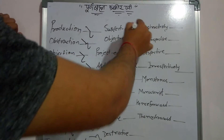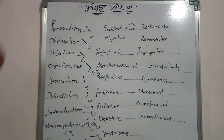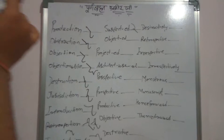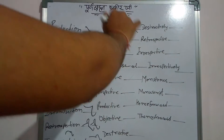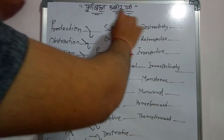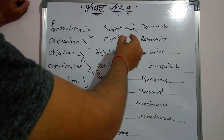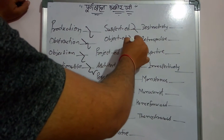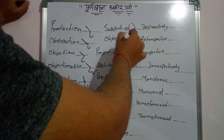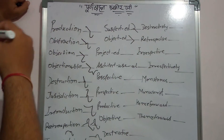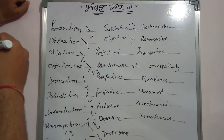Suspect, suspect, suspect, suspected — के लिए एक ही outline? Object, object, और object के लिए क्या? Project.